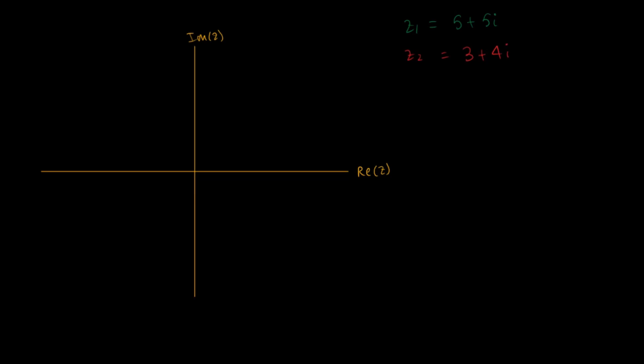Now if you wanted to add these, you can do that quickly analytically. Z1 plus Z2 will be equal to 5 plus 3, which gives you 8, and 5i plus 4i gives you 9i. So 8 plus 9i is the resultant sum of these two complex numbers.